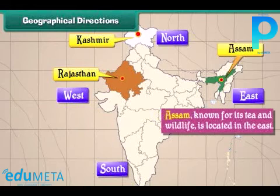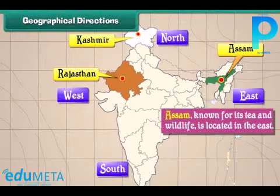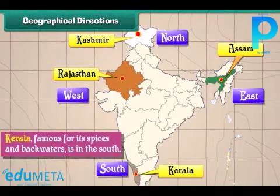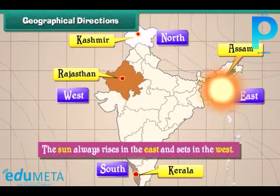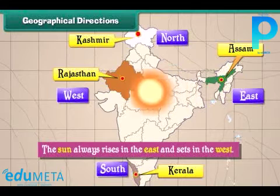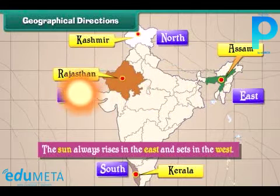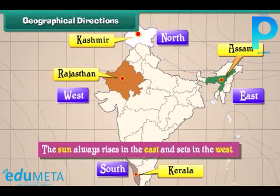Assam, known for its tea and wildlife, is located in the east. Kerala, famous for its spices and backwaters, is in the south. The sun always rises in the east and sets in the west.